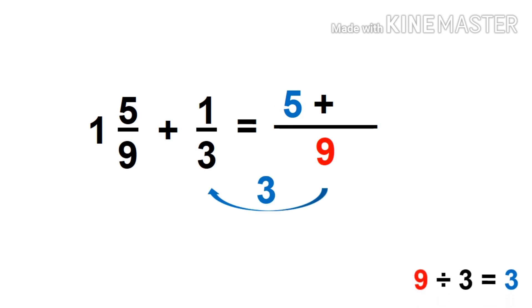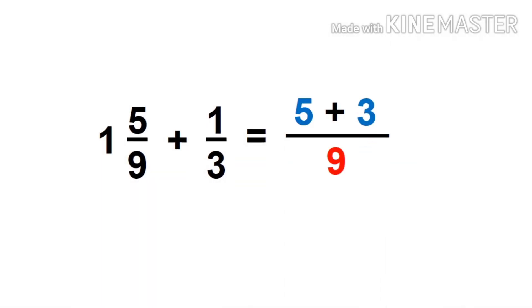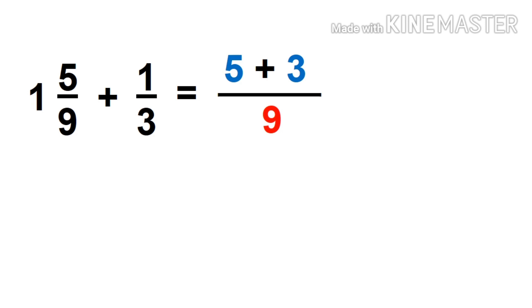Then 9 divided by 3 equals 3. After that, multiply 3 by the numerator 1, that is 3. Write 3 as our second numerator. We can now add our numerators. 5 plus 3 equals 8. So we have 8/9.